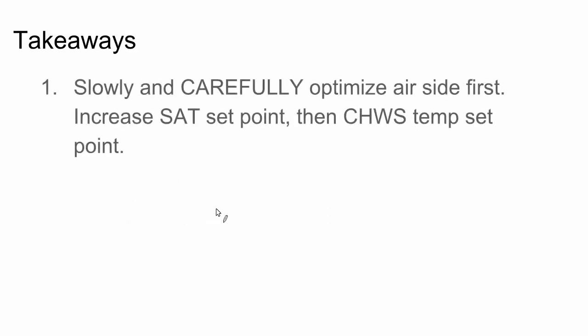So what are the takeaways here? Well there's three points that we talked about. The first is that you want to optimize the air side first. And you do that by carefully increasing the supply air temperature set point, and then and only then making a permanent change to the chilled water supply temperature set point. Always observing and checking to make sure the changes you're making are not impacting comfort or performance anywhere in the building.